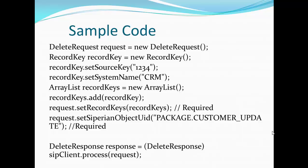The sample code looks like this: create a DeleteRequest object using the new operator, then create a RecordKey and set the source system or the row ID xref, and set the system name. Once you create this RecordKey, you have to set it in an ArrayList. The reason for using an ArrayList is that an xref can maintain many records for a particular winning base object record. If you want to delete all the records in a single request, you can populate the ArrayList with multiple RecordKeys. In this example we put just one, but you can put N number of RecordKeys. Once you populate the ArrayList, set the record keys in the request object.